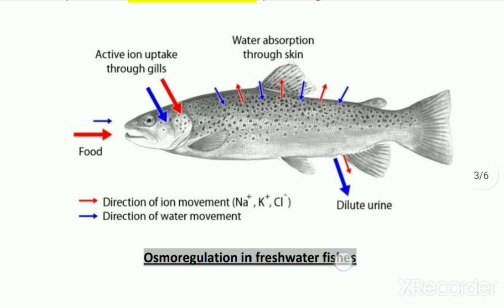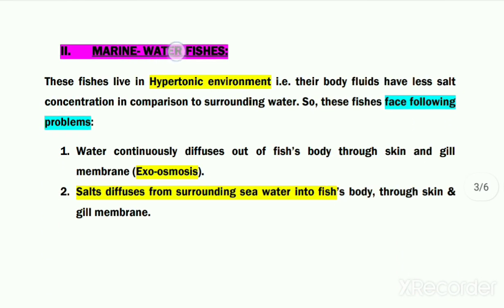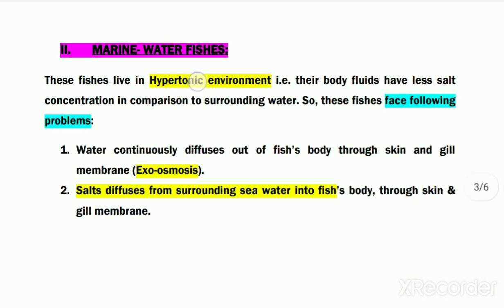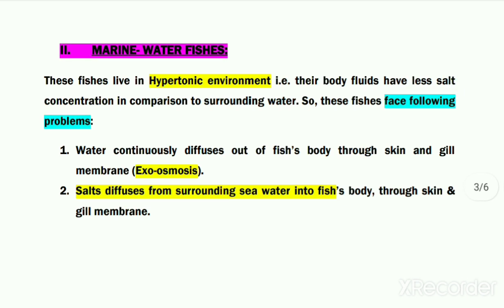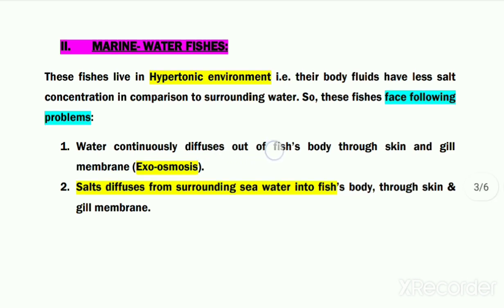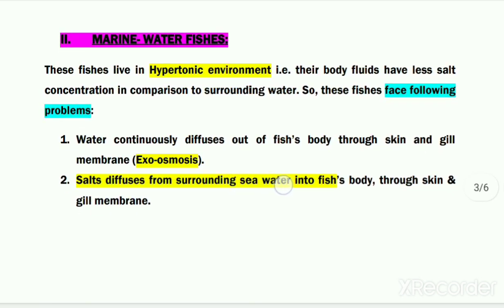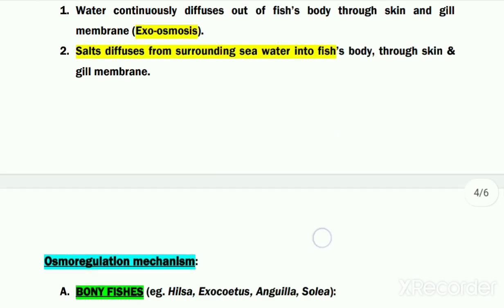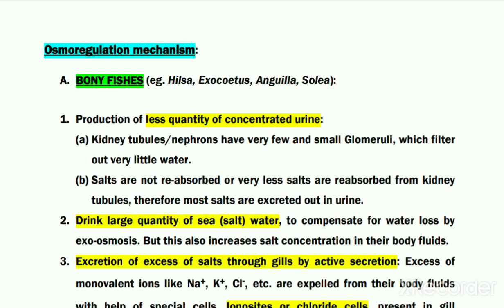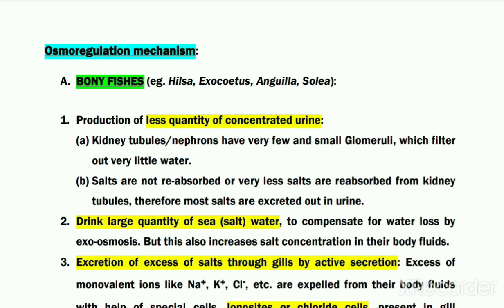Next is osmoregulation in marine fishes, which are present in a hypertonic environment — meaning their body fluids have less salt concentration compared to the surrounding seawater. These fishes face exactly opposite problems to freshwater fish: first is exosmosis, where water continuously diffuses out of the fish's body into the surrounding water; and second, salts diffuse from the surrounding sea water into the fish's body since salt concentration is higher outside. The osmoregulation mechanism differs between marine bony fishes and marine cartilaginous fishes.